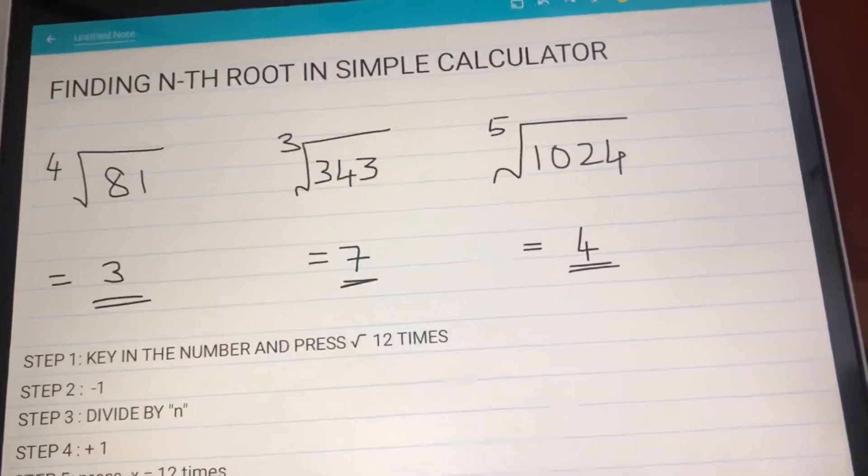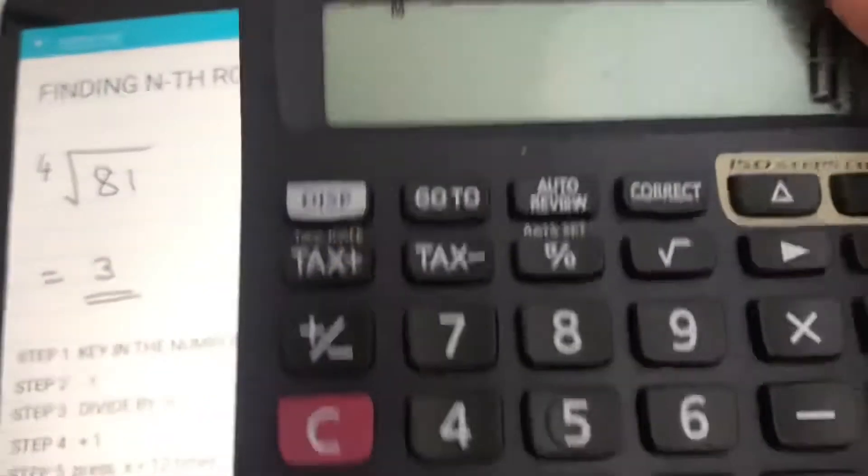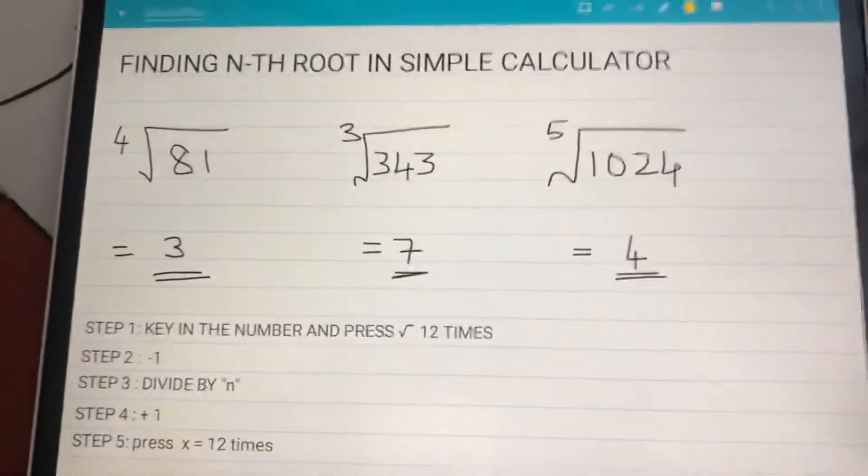Fifth root of 1024 - can we find this using this simple calculator? Definitely we can. Let's see how we can do it.